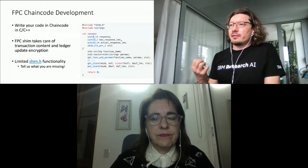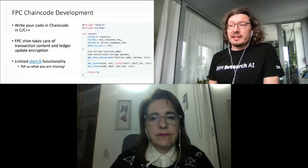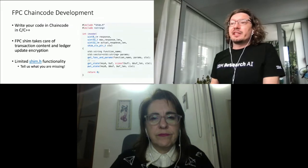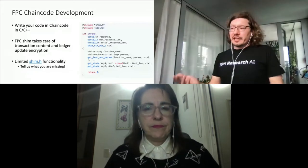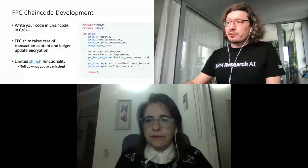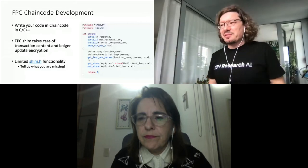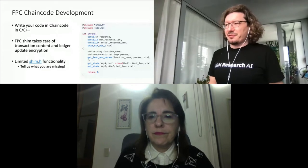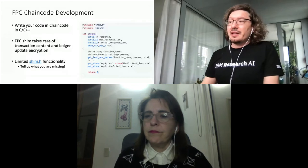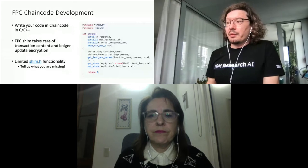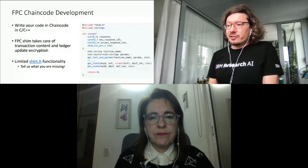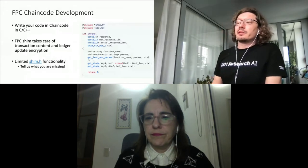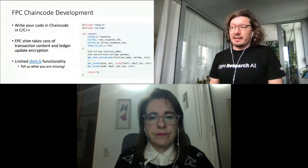Let's have a look at what a Fabric Private Chaincode looks like. We are relying on the Intel SGX SDK for compiling the actual chaincode, so FPC chaincode is written in C/C++. However, in order to provide the same look and feel as you're already familiar with from other chaincode languages like Go or JavaScript, we try to provide the same experience from the perspective of a C++ developer. That means to write a chaincode, you just have to implement an invoke method which triggers your application logic, and our FPC shim allows you to access the ledger through get state and put state operations, as well as get the function name and parameters.